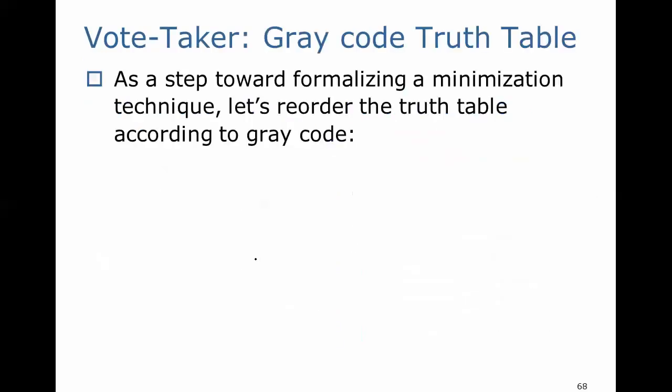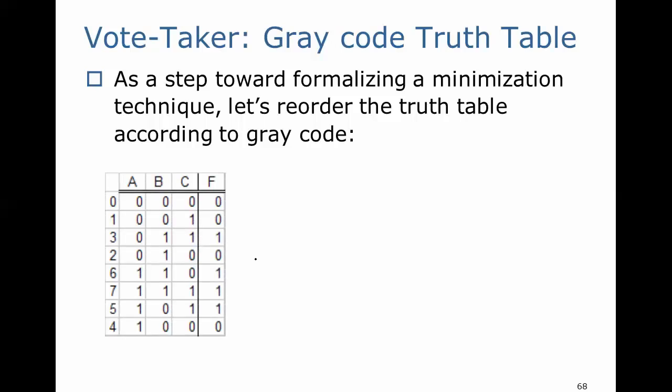But we want to formalize this technique. So let's take one more step forward before we go to the Karnaugh map, and let's reorder the truth table according to gray code. Gray code is just simply reordering the entries — the permutations of A, B, and C state — so that between any two adjacent entries, only one of the inputs A, B, or C is changing states, either from 0 to 1 or 1 to 0. So only one change between any two entries.